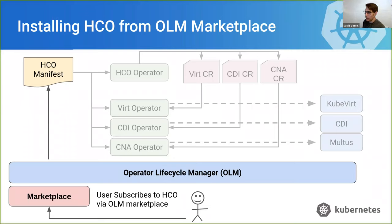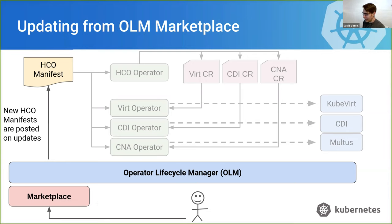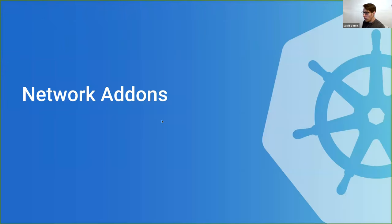So that's my brief intro to KubeVirt and opinionated installs. The key takeaway is that KubeVirt performance doesn't happen automatically — it has to be configured and tuned, and it's our job as KubeVirt and Kubernetes developers to provide ways to enable these tunings. Now I'll hand off to Petter, who will talk about network performance in detail.